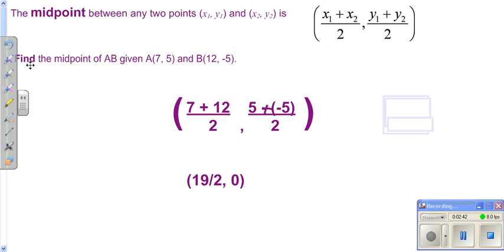Now, could you have written this differently? Yes, you could have written 9.5 comma 0 and gotten the same answer, which would also be acceptable.